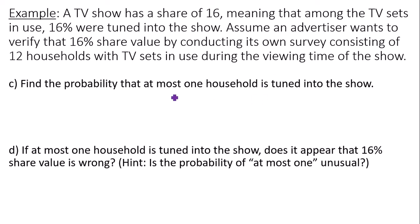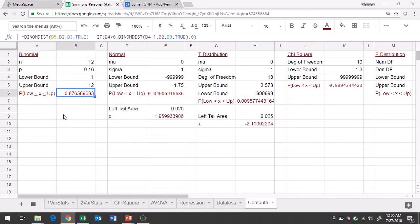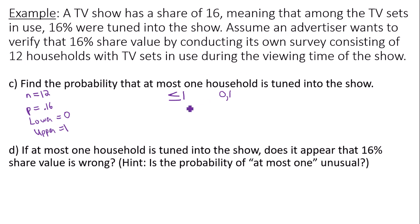Part C: what about at most one? At most one means less than or equal to one, so zero or one are the only options. The number of trials is still 12, probability of success is still 0.16. The lower bound is zero and the upper bound is one. Computing this in Google Sheets gives us 0.4055. So the probability of at most one household being tuned in is 0.4055.